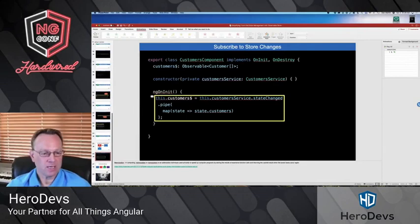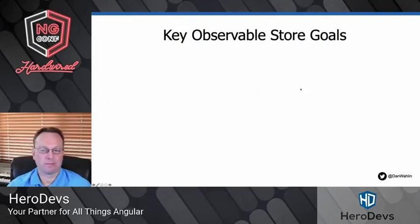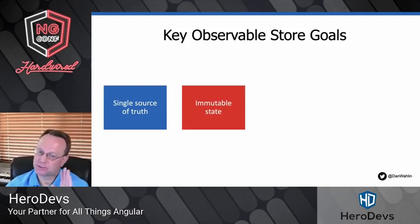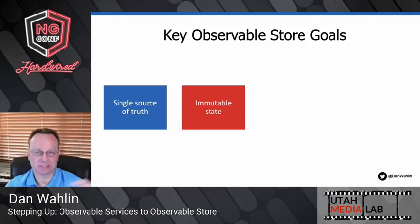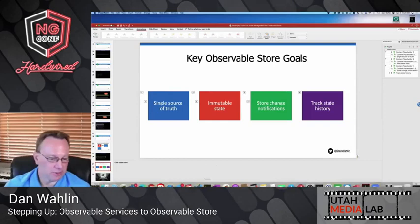To review the overall goals: single source of truth, immutable state — super important, there's a lot going on behind the scenes in Observable Store to ensure state is not being mutated because that can mess up all kinds of things — notifications, and we have history as well.